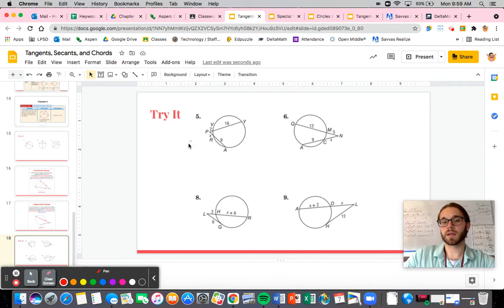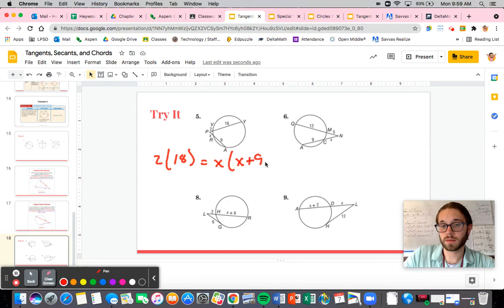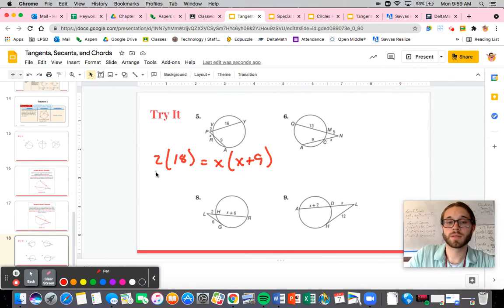In terms of this one, don't forget it is two times the whole thing. It's very tempting to write 16. It's not times 16, it's times 18. X times the whole thing, right? So here you can see one that's going to end up being factorable. So we have 36 is equal to X squared plus nine X.